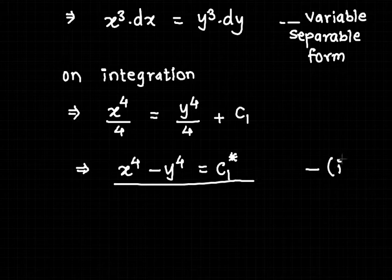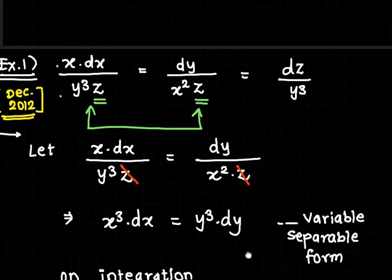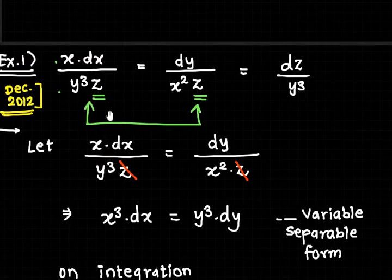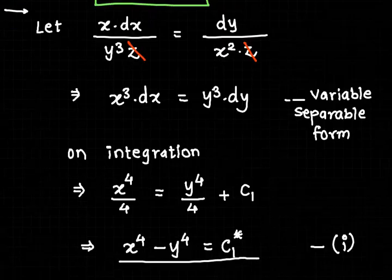This is equation number 1, which gives us solution number 1 of the given differential equation. Now, going back to the given equation, we select another ratio. If we equate the first and third ratios, y³ can be cancelled from the denominator, converting into variable separable form in terms of x and z.